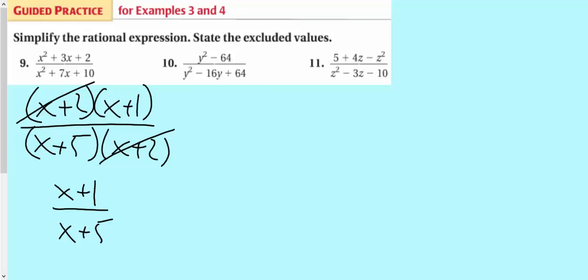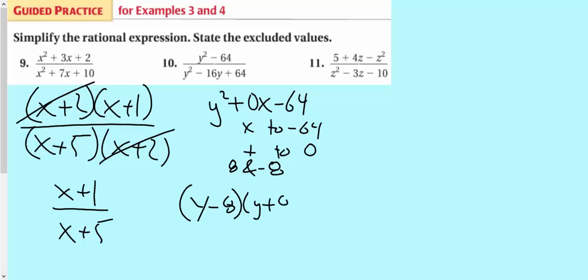All right. This one here. Again, this is an example where it's a binomial. So I'm going to add in a 0x right there. What two numbers multiply to negative 64, but add to 0? That's 8 and negative 8. Okay, so the top is y minus 8, y plus 8. And then the denominator is y minus 8 and y minus 8. Negative 8 times negative 8 is positive 64, but negative 8 plus negative 8 is negative 16. All right. Those cancel out and you're left with y plus 8 over y minus 8.